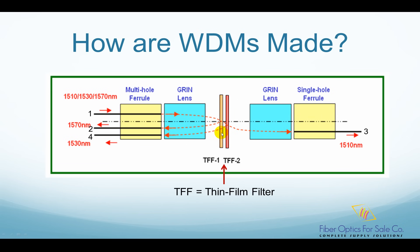This is a demultiplexing WDM device, which means that it separates combined colored lights from a single fiber into separate individual fibers. But if used in the reverse direction, it can also combine different colored lights from individual fibers into a single fiber.